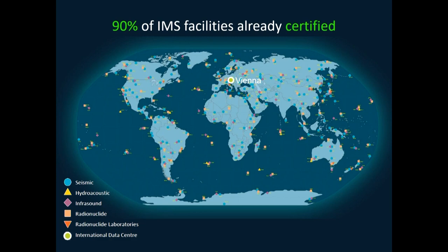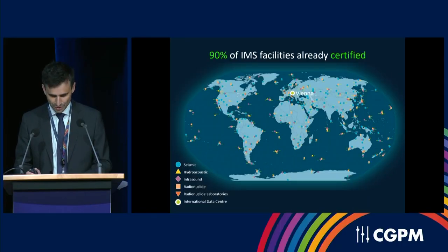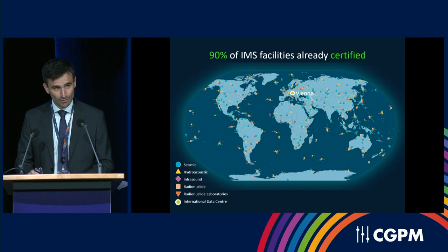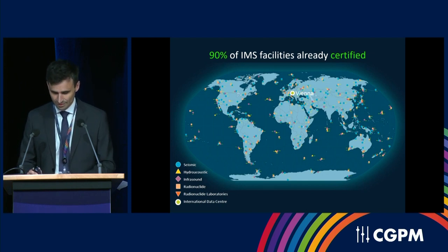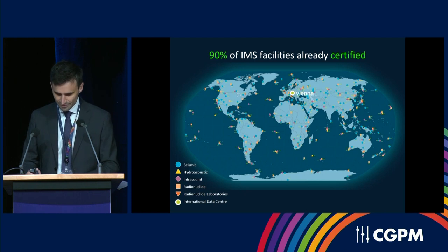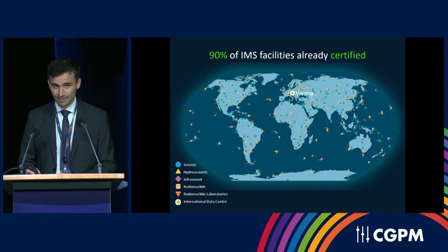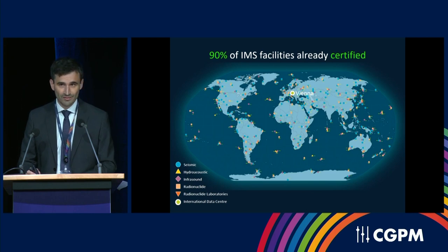Ninety percent of IMS facilities are already certified and operational today. The network has already proven its effectiveness, but it is not only used to detect nuclear tests. It's also used for other civilian purposes, to contribute to saving lives and to expand scientific knowledge. For instance, the IMS data is used to contribute to tsunami warning systems, but also to track nuclear releases in case of a nuclear accident, such as the one in Fukushima Daiichi in 2011. The IMS network data is also made available to member states and researchers who want to conduct research, for instance on climate change.